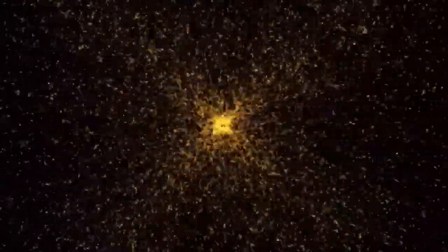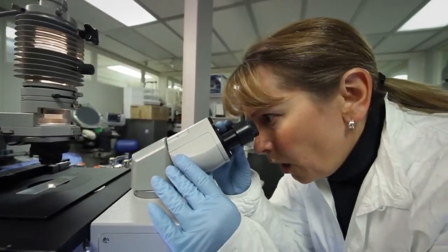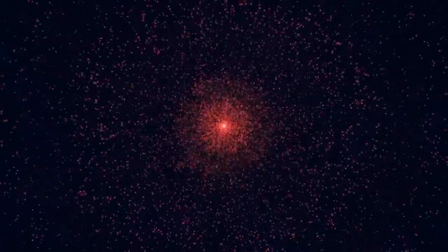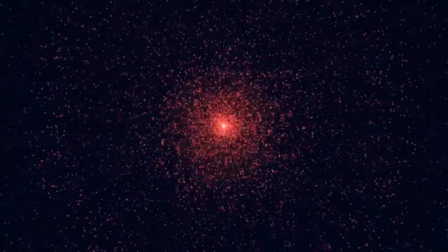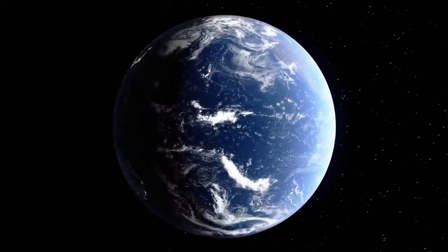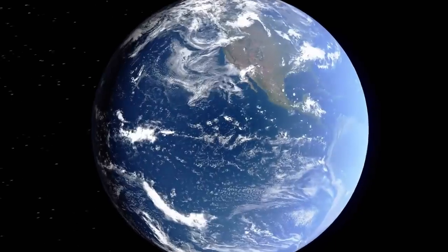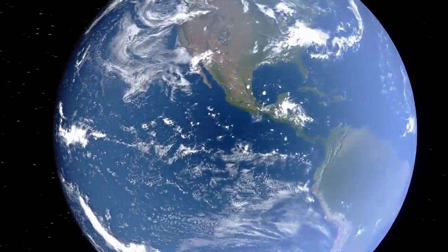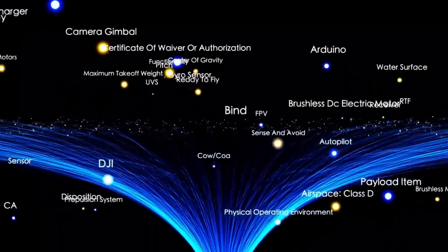Fortunately, Betelgeuse is far enough from Earth that even a powerful supernova wouldn't pose a threat to our planet. But if such an event were to happen closer to home, the results could be devastating. Gamma-ray bursts, sometimes linked with certain supernovae, could strip away Earth's ozone layer, leading to harmful levels of ultraviolet radiation. This could endanger human health, disrupt ecosystems, and negatively impact agriculture. Additionally, the electromagnetic pulse from a nearby explosion could interfere with satellites and electronic systems.